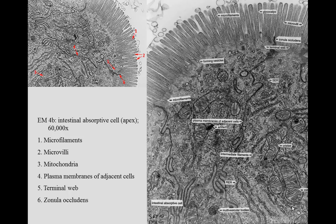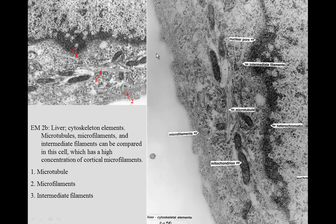You can see the actin filaments — little lines in there. These are the actin filaments themselves, which are microfilaments. They project down into this region, which is the terminal web. So the filaments actually go from within the microvillus down into the terminal web, and you can see the plasma membrane surrounding each one of those.